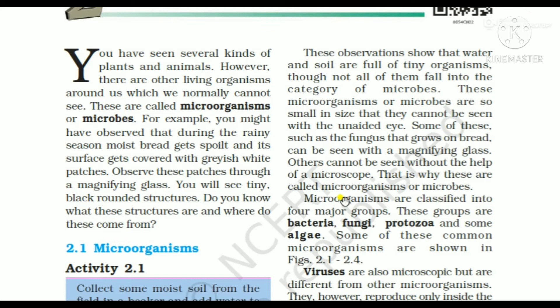Microorganisms are classified into four major groups. Those groups are: bacteria, fungi, protozoa, and some algae. Some of these common microorganisms are shown in figures 2.1 to 2.4. We will see which are unicellular, which are multicellular, and what their functions are.